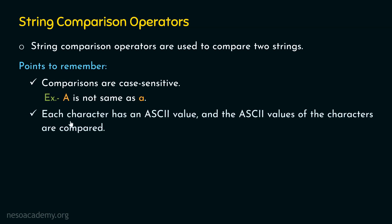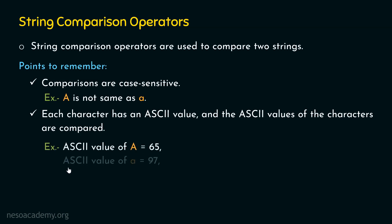The second point is: each character has an ASCII value, and the ASCII values of the characters are compared. Each character has a unique value called its ASCII value. ASCII stands for American Standard Code for Information Interchange. In reality, the ASCII values of the characters are compared, not the characters themselves. For example, the ASCII value of capital A is 65, and the ASCII value of small a is 97. So 65 is less than 97, hence capital A is less than small a.